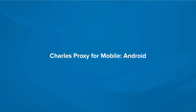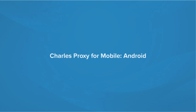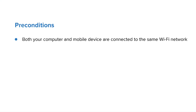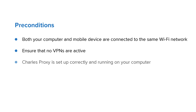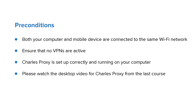Charles Proxy for Mobile, Android Edition. Before starting, please make sure of the following: both your computer and your mobile device are connected to the same Wi-Fi network, ensure that no VPNs are active, and ensure that Charles Proxy is set up correctly and running on your computer. Please watch the desktop video for Charles Proxy from the last course if you are unsure.